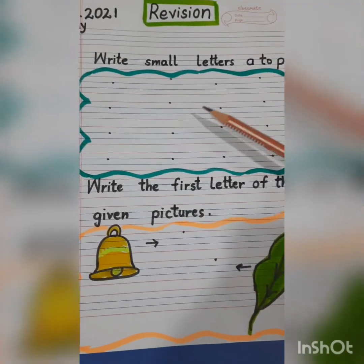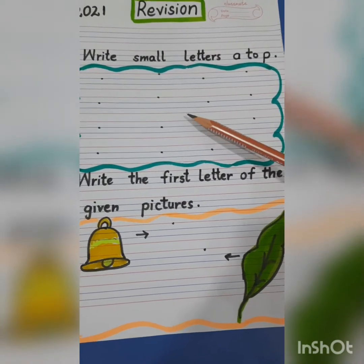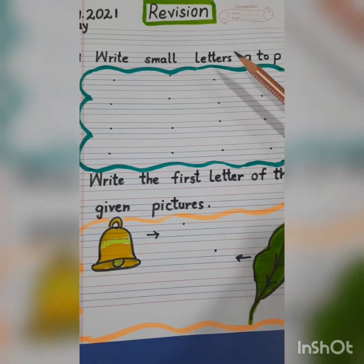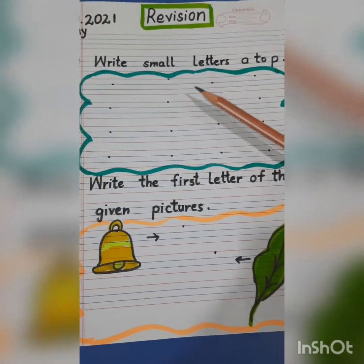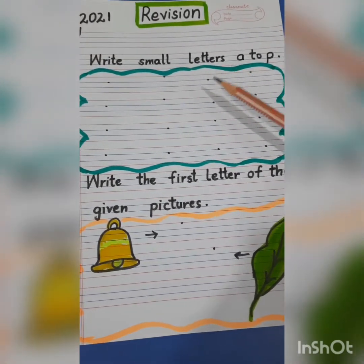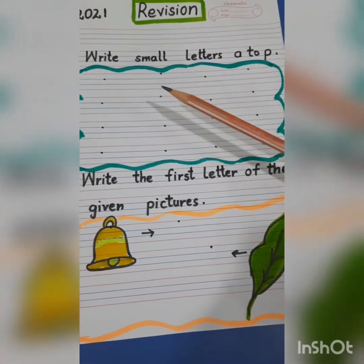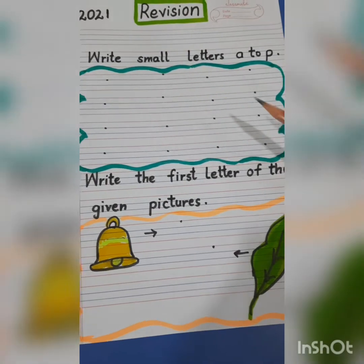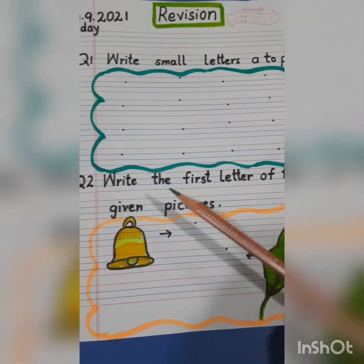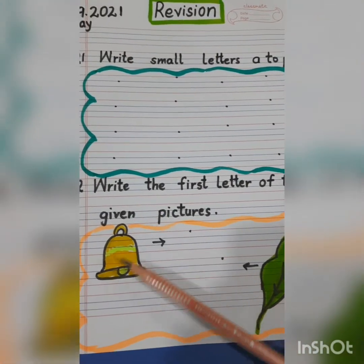So here you all have to write small letters. What do we have to do in the first question? The small letters means the baby letters — we have A to P to finish. We will write A to P here. Right children?